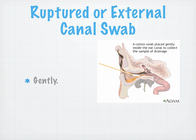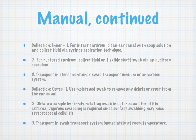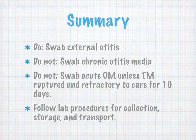For a ruptured or external ear canal swab, you can do that one well — rock it gently. The lab manual on ear culture notes preliminary reports available at 24 hours, final results at five days. Specimen types, sterile containers, and how much aspirate you need are covered on the next slides: for an intact eardrum use tympanocentesis; for a ruptured eardrum transport in a sterile container; for the outer ear use a moistened swab to remove crust, obtain the sample by rotating, then transport. In summary: do swab external otitis; do not swab chronic otitis; do not swab acute otitis media unless the TM is ruptured and refractory to care for 10 days. Follow your lab procedures for collection.